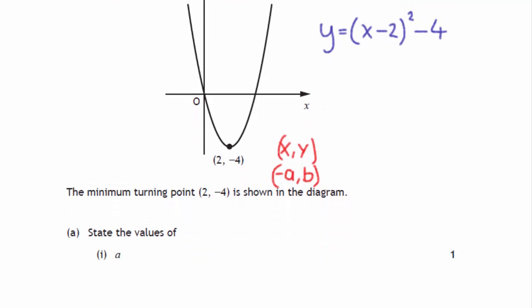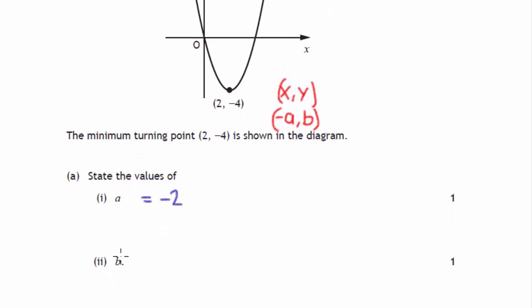So what we've got here is when they're saying state the values we have a is equal to minus 2 and we have b is, if you can see that, sorry, b is equal to minus 4. And that's where your 2 marks there.